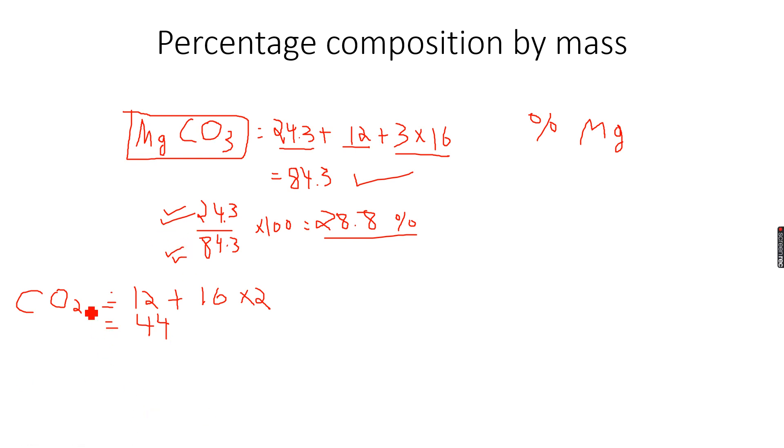Then we calculate the percentage by mass of oxygen. The total mass contributed by oxygen is 32, and the total mass of CO2 is 44. When we multiply this by 100, we get the percentage by mass of oxygen, which is 32 divided by 44 times 100. The answer is 72.7%.